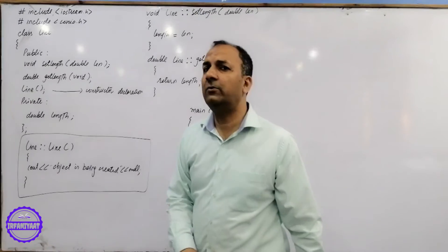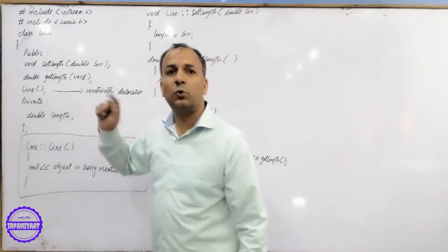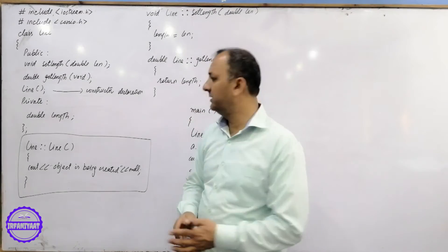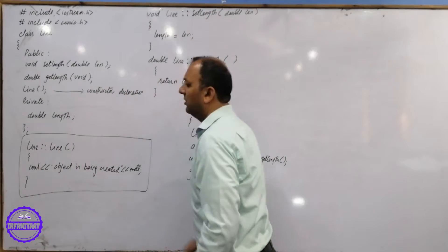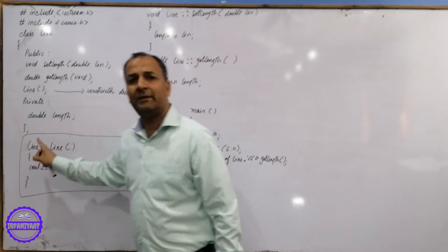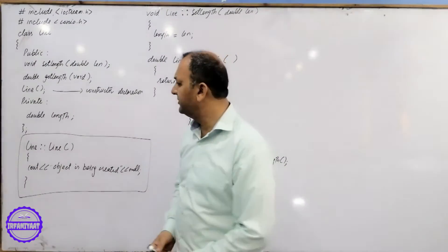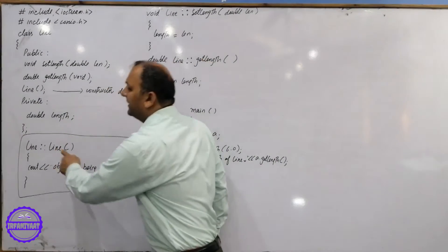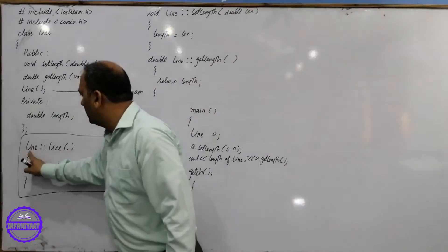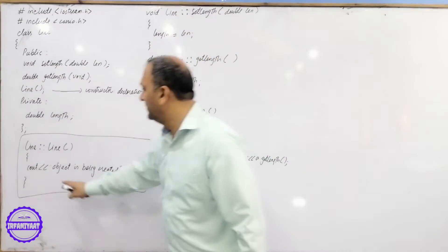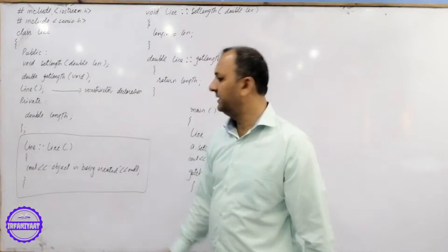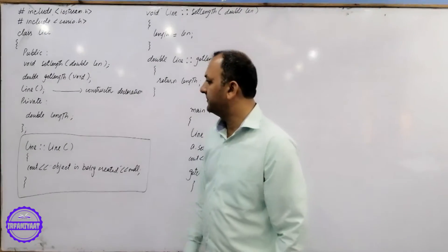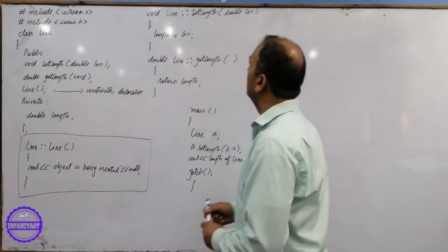When you define the function of the class, we use the scope resolution operator. This line is the class scope — this is the scope resolution. Why is this line? Because this line is the constructor. This is the constructor's definition. When the object is created, this will print a message.